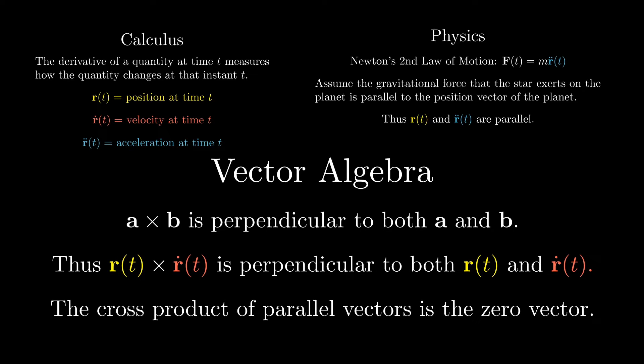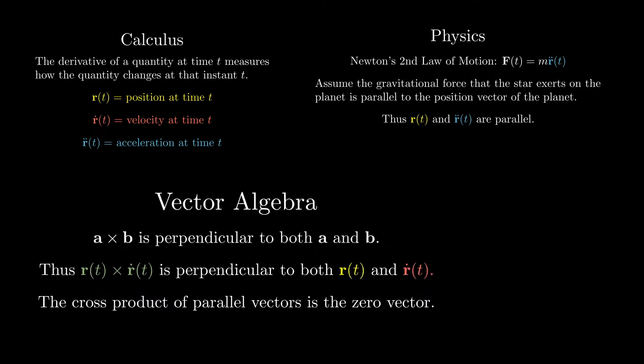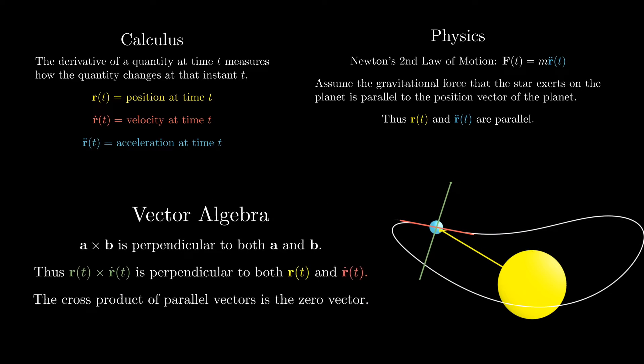Finally, some vector algebra. The cross product of two vectors a and b yields a vector that's perpendicular to a and b. So, r cross r dot is perpendicular to both r and r dot. And later, we'll need the fact that the cross product of parallel vectors is the zero vector.